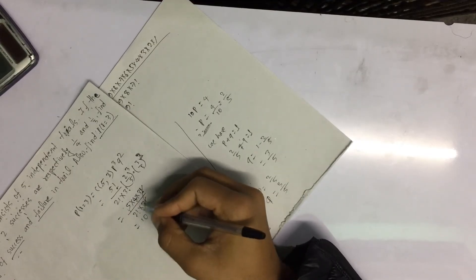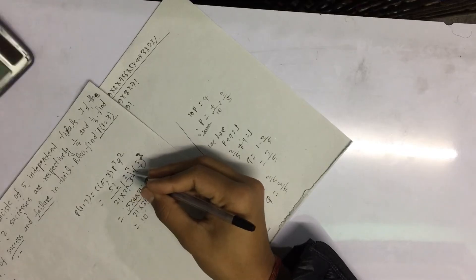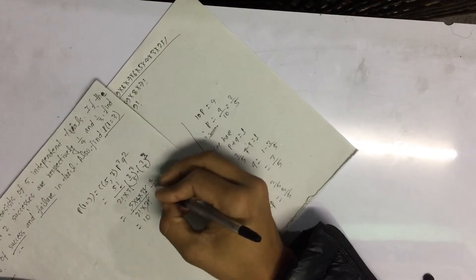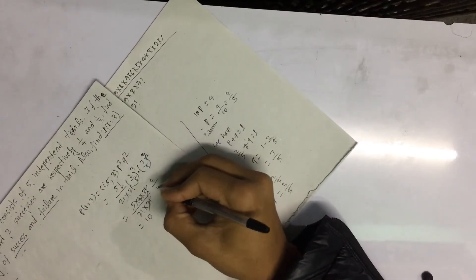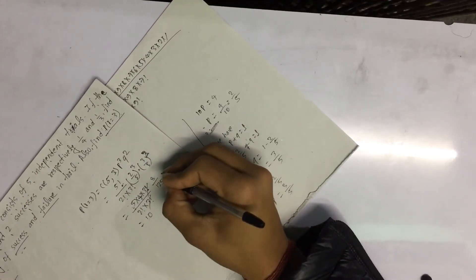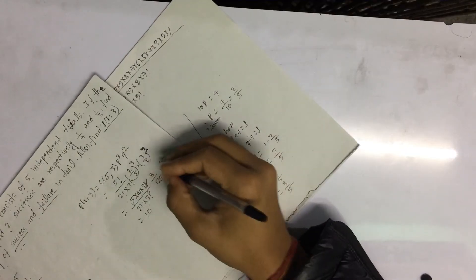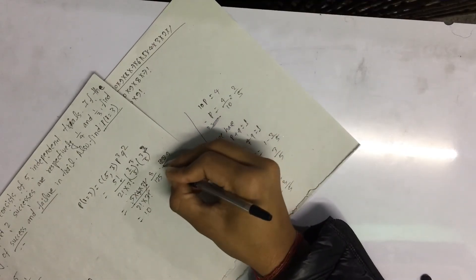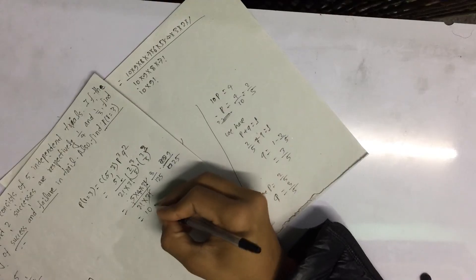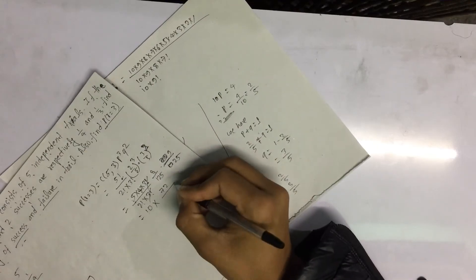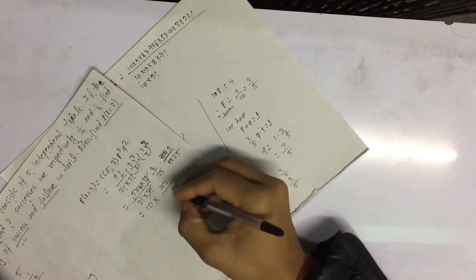Calculating: (2 by 5) cubed is 8 by 125, and (3 by 5) squared is 9 by 25. So P(3) = 10 into 8 by 125 into 9 by 25. That gives 10 into 72 by 3125, which equals 720 by 3125, simplifying to 144 by 625.